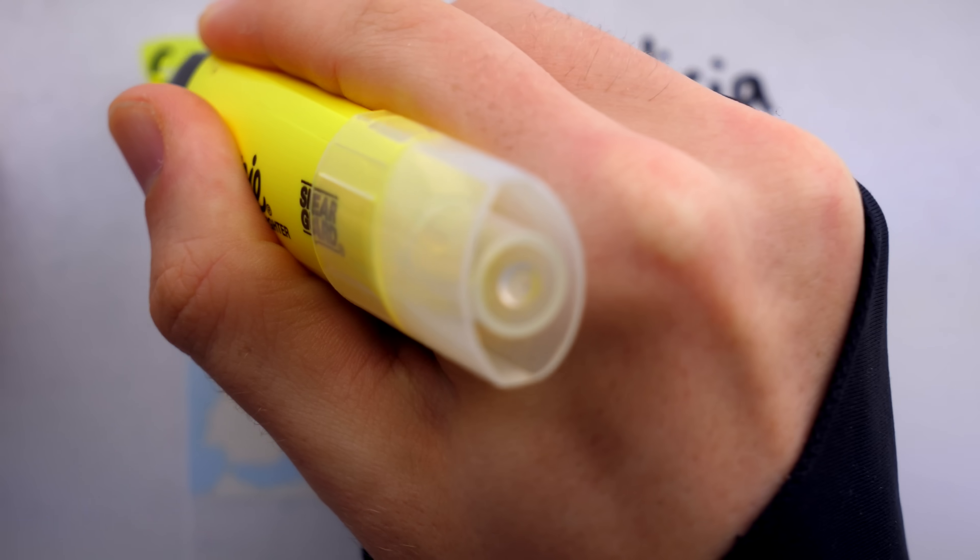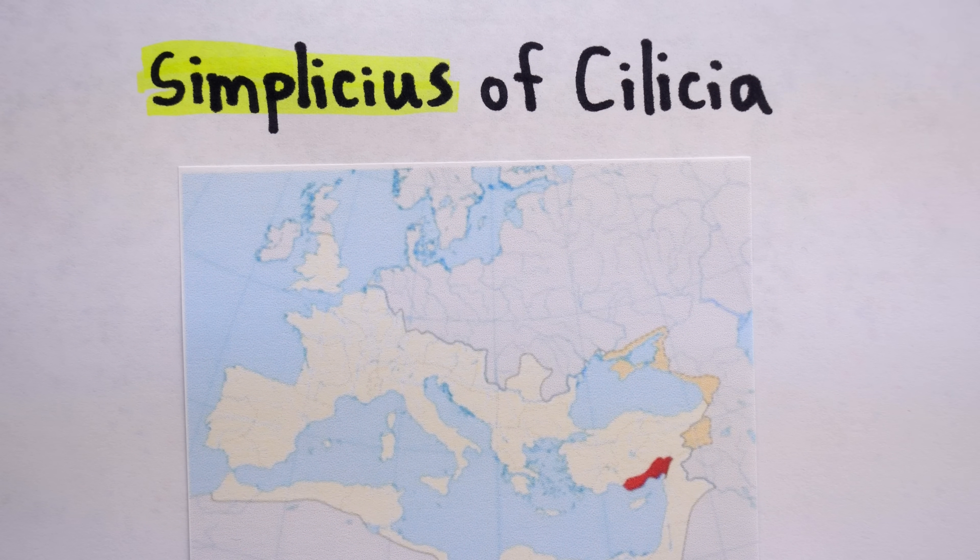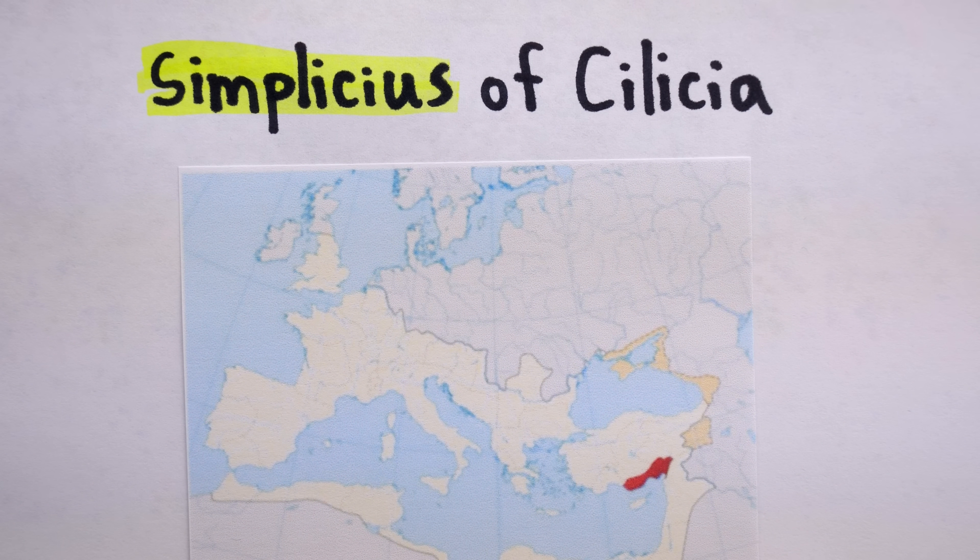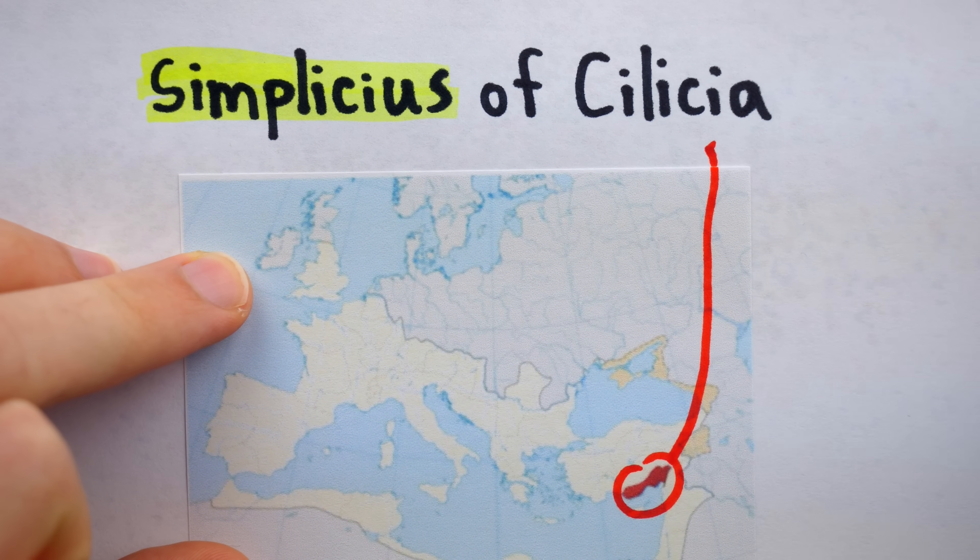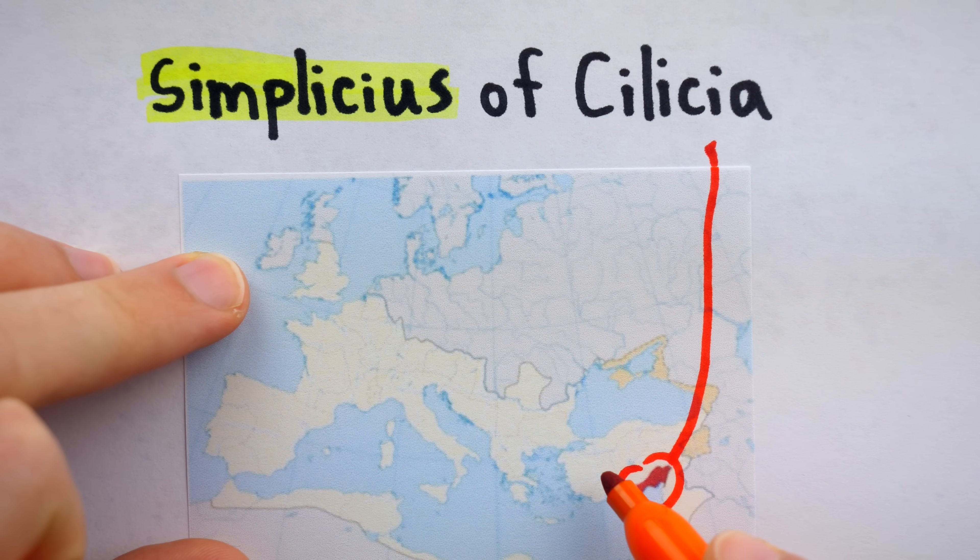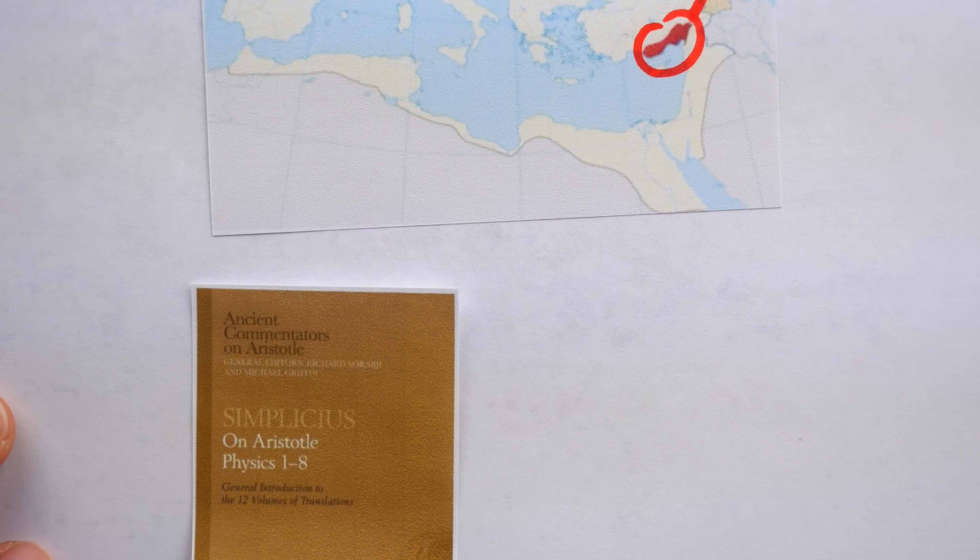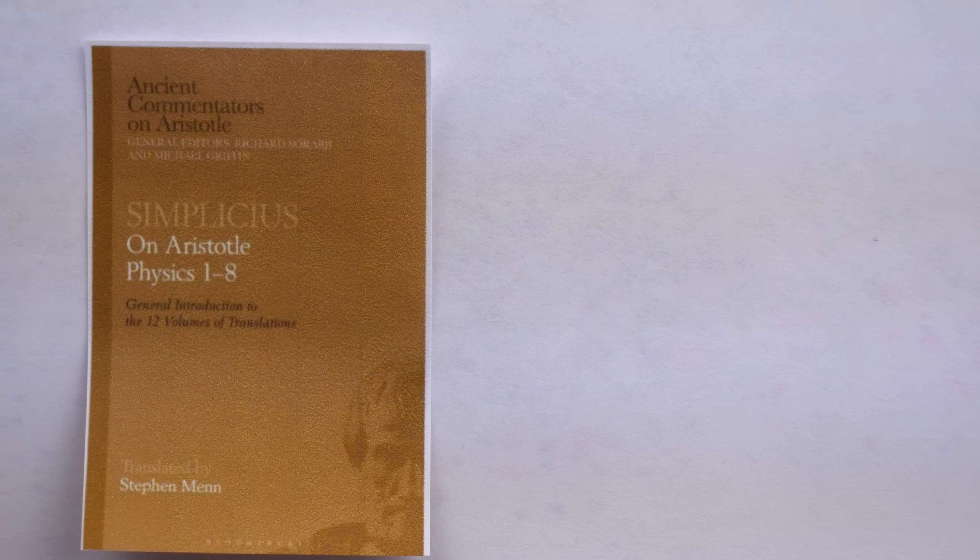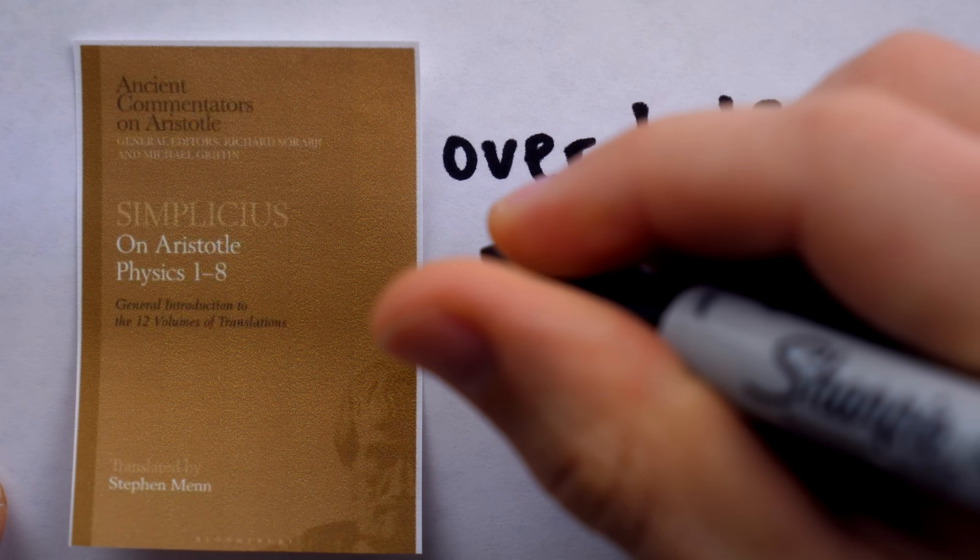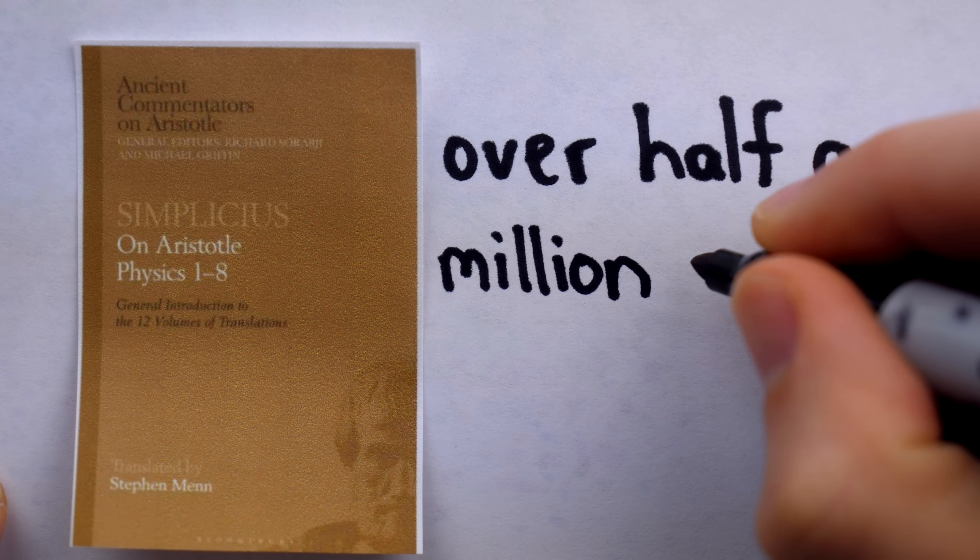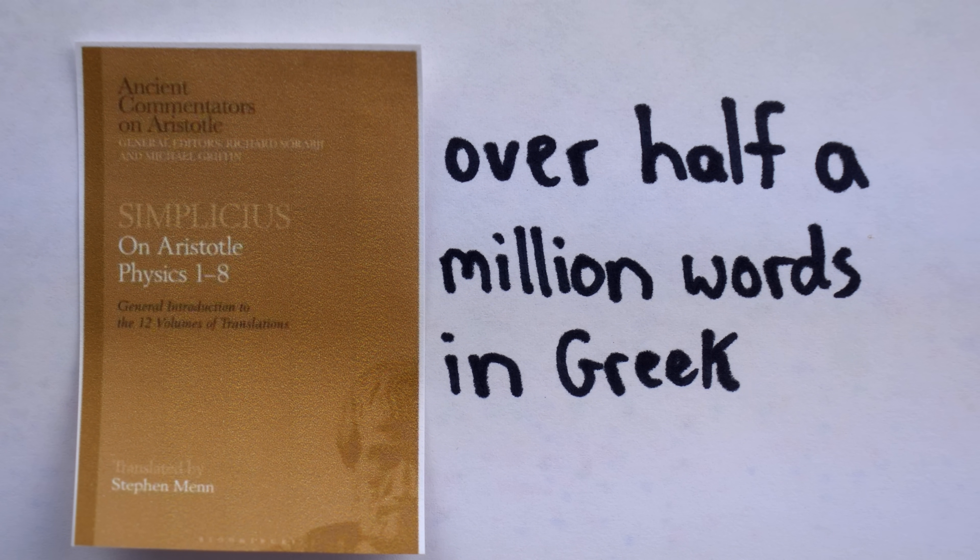Simplicius of Cilicia was a pagan philosopher who wrote extensive commentaries on the works of Aristotle and others. This is Cilicia on a map. For perspective, that's the Black Sea, and this is Turkey. Now, as luck would have it, in Simplicius' enormous commentary on Aristotle's physics, which was written around the year 500 in the Common Era and consisted of over half a million words in Greek.